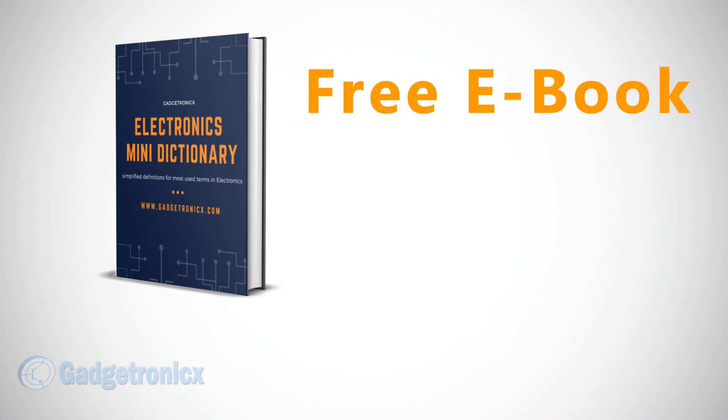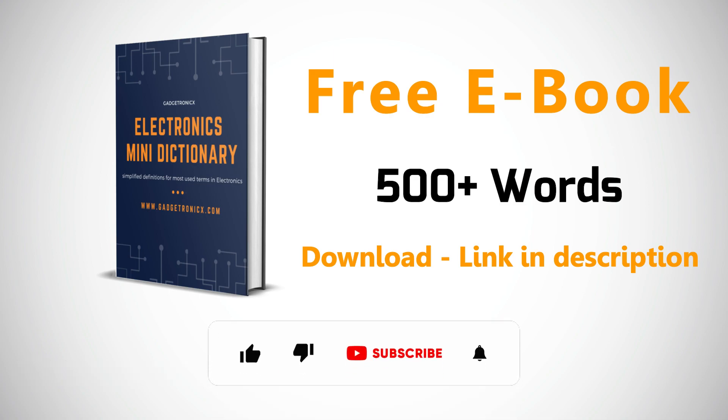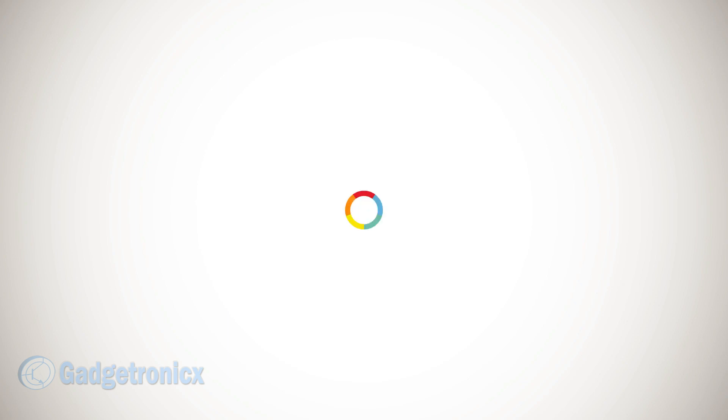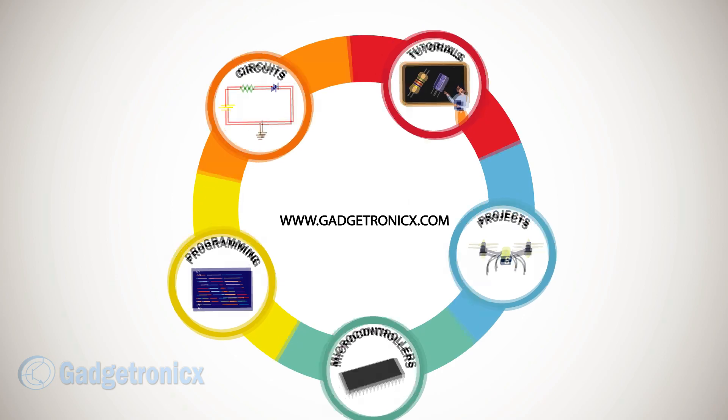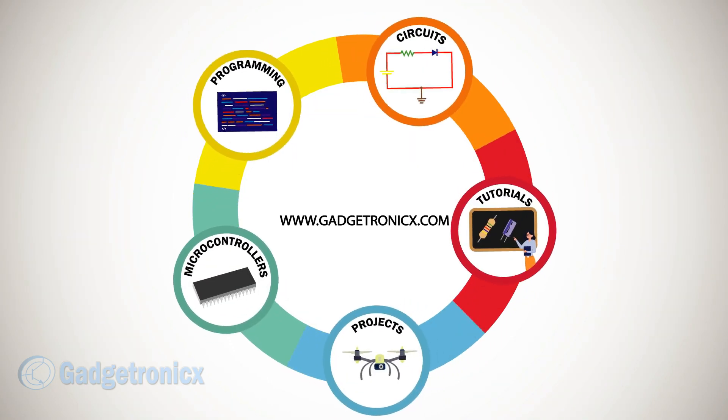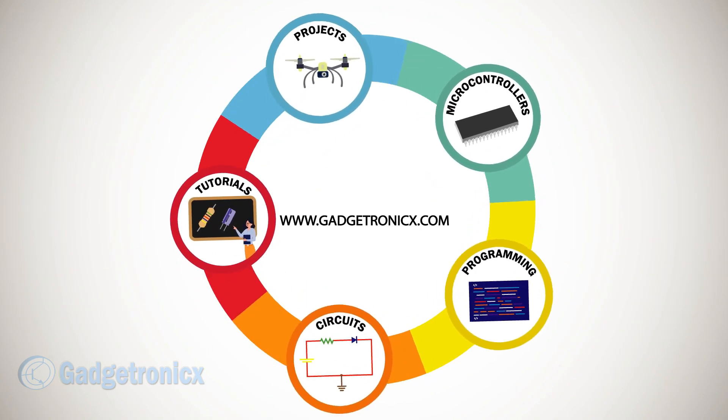Grab our free ebook, Electronics Mini Dictionary, which has simplified definitions of more than 500 commonly used terms in electronics. You can download that from the link given in the description below. Subscribe to our channel and hit the notification icon to get notified about our videos. Visit our website www.gadgetronics.com for more resources on electronics. If you want us to make a video about a specific concept, mention it in the comment section below. See more of the concept videos here.